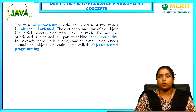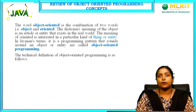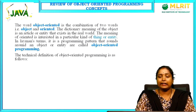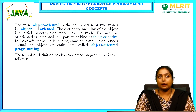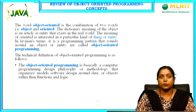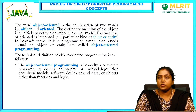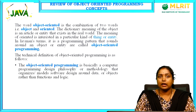Coming to the review of object oriented programming — the name itself tells us: object oriented is a combination of two words, object and oriented. Objects are nothing but real-life entities. We take real-life entities as examples and write programs around them. The technical definition is: object oriented programming is a computer programming design philosophy or methodology that organizes software design around data or objects rather than functions and logic.